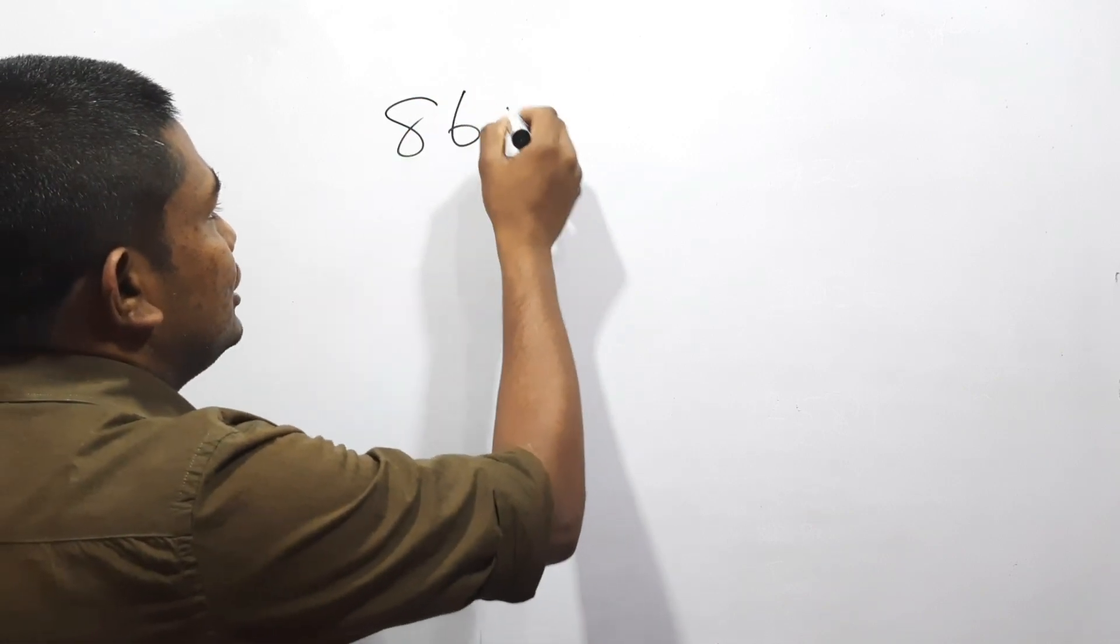Okay, we'll see how we can do these calculations very fast. 86 into 26. It is 6 into 26.